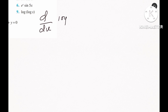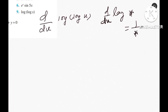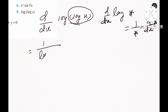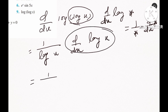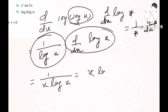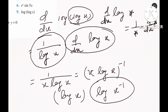Number 9: find the derivative of log(log x). Wherever there is a variable inside log, the derivative is 1 by that variable, times the derivative of that variable — chain rule. So the first derivative of log(log x) is 1 by log x, times the derivative of log x, which is 1 by x. So the first derivative is 1 by (x log x).